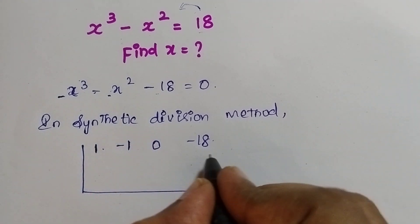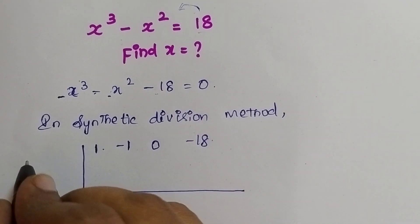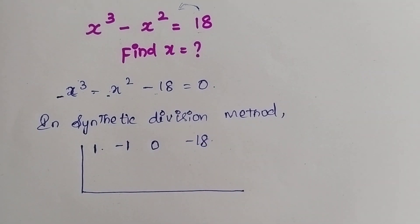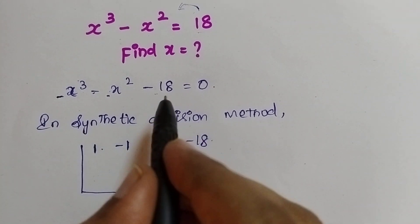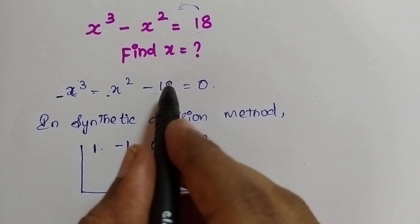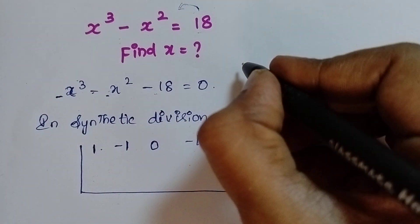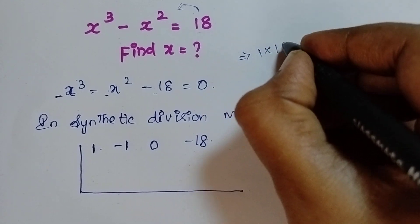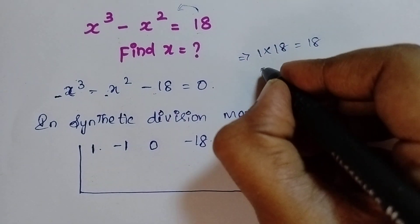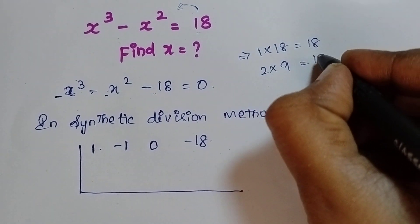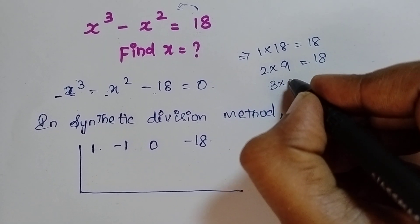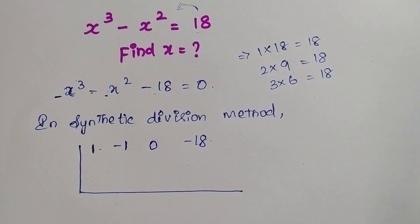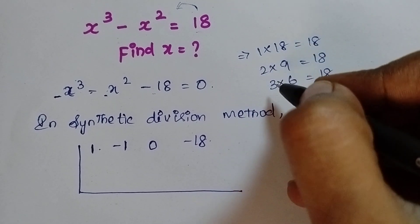So if you want to solve this, we need to know what factors are there in the equation. Here the constant is 18. So what are the factors of 18? The factors of 18 are: 1 × 18, 2 × 9, and 3 × 6. So let's check one by one to see which will work in this format.